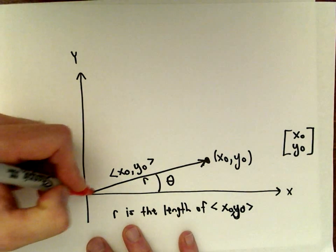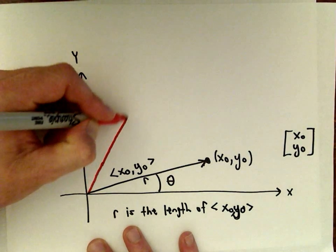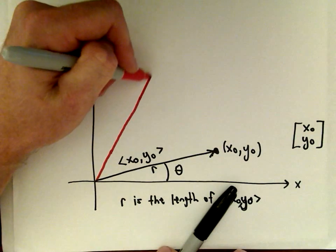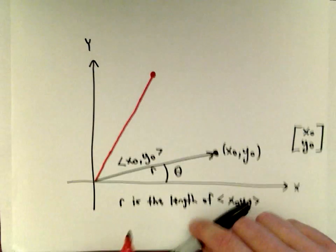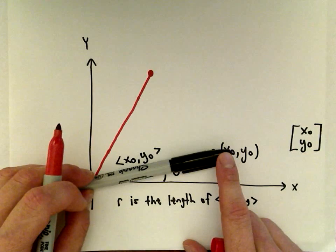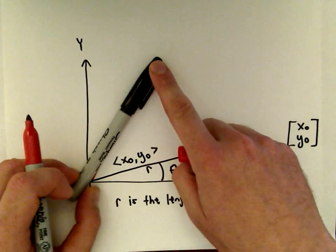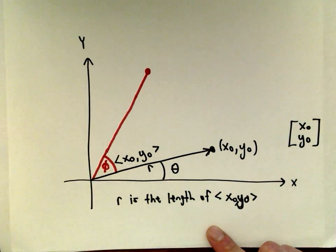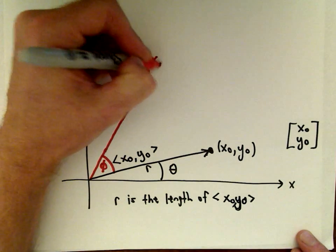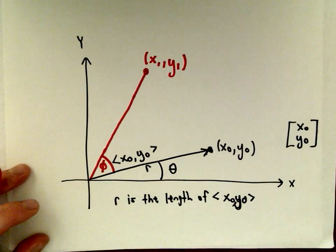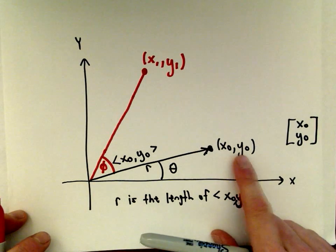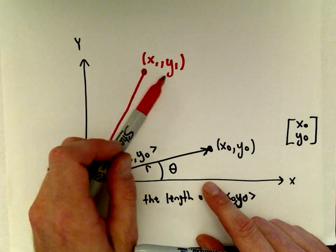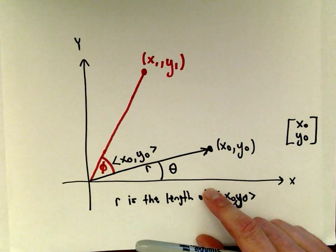We're going to rotate it — let's try to make them roughly the same length, so we're not going to change the length. We're going to take that point that was at x₀, y₀ and rotate it to a new place. This new angle that we're rotating it is going to be the angle phi, and we're clearly going to get a new point here. We'll call that x₁, y₁. The goal is: you have some point you're starting with, and you want to know — if I rotate it by so many degrees, how do I get the coordinates of that new point? How would I find x₁ and y₁?